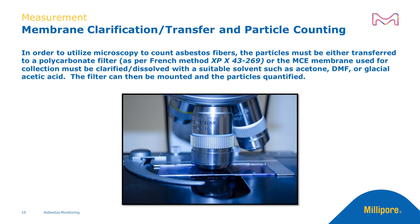In order to count asbestos fibers via microscopy, the particles must either be transferred to a polycarbonate filter, as per the French method XPX 43-269, or the MCE membrane used for collection must be clarified or dissolved with a suitable solvent such as acetone, DMF, or glacial acetic acid. At this point, the filter can then be mounted and the particles quantified.